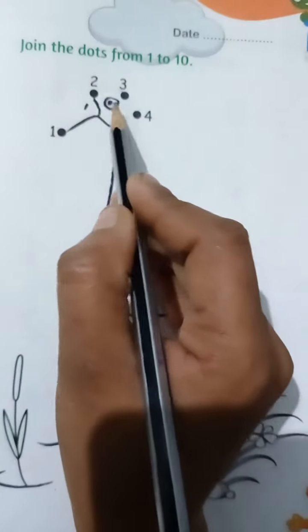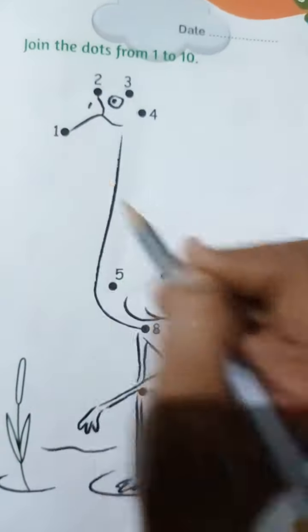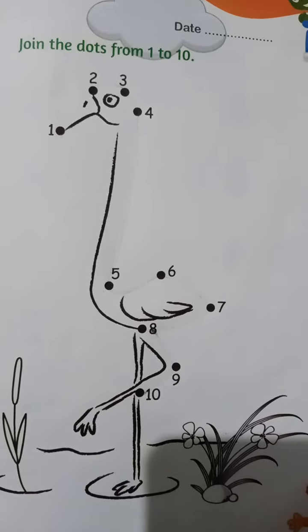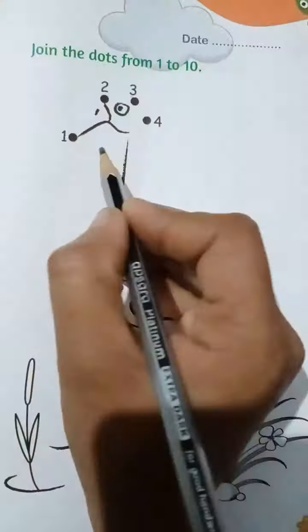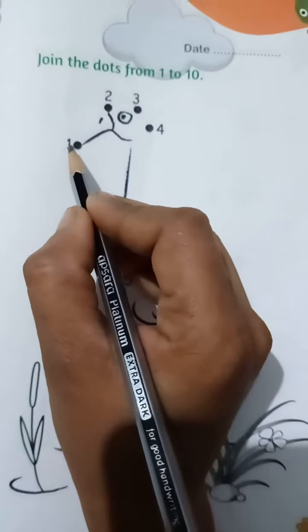Here we have dots. There is a number on this dot. We have to join it and make a picture. So ready? Which number is written here? 1.